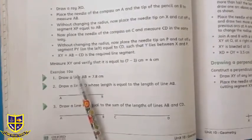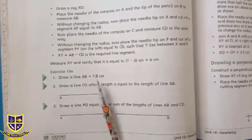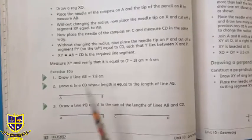Exercise 10a, question number one: draw a line AB is equal to 7.8 cm.